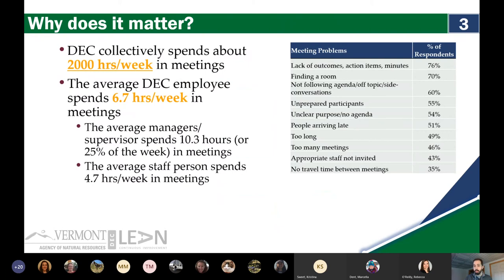The average manager and supervisor spends about 25% of their week in meetings, whereas the average staff person spends about half a day in meetings. And when we ask people what the primary meeting problems they saw were, there were a couple that really stood out.